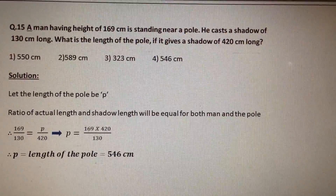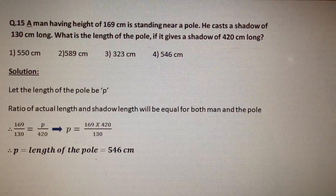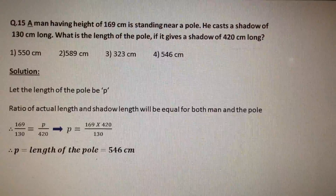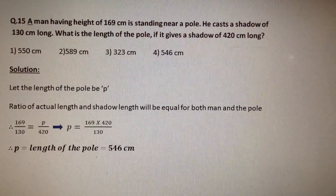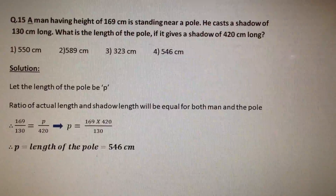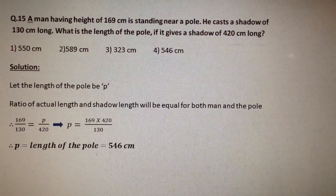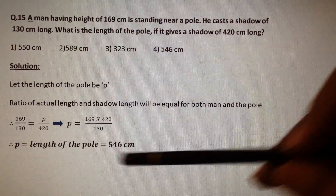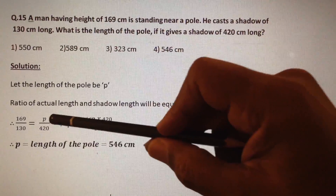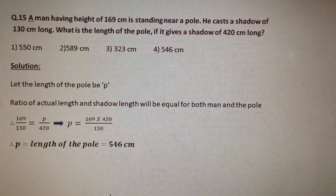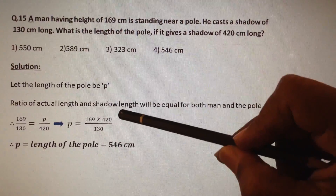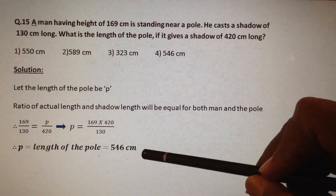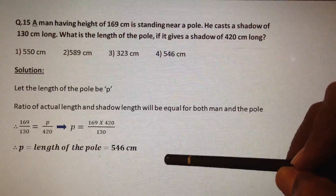The ratio of actual height to shadow length of the man is 169 to 130. Similarly, the ratio of actual length to shadow length of the pole is P to 420 cm. These two ratios are equal. Therefore, 169 by 130 is equal to P by 420. Therefore, P is equal to 169 into 420 by 130. Therefore, the length of the pole is equal to 546 cm. So our answer is option number 4.